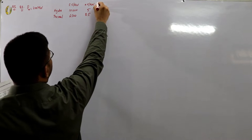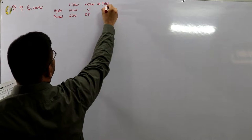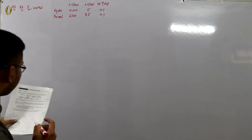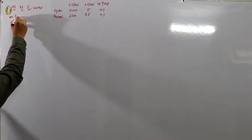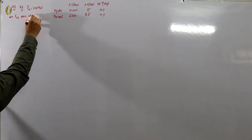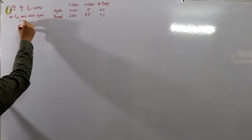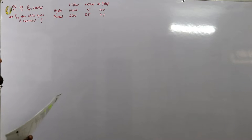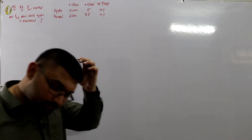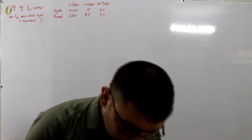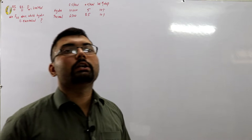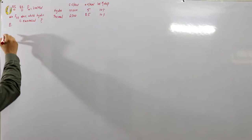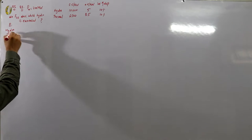The interest and depreciation factor for both is 10%. They are asking us to calculate the minimum load factor above which hydro will be economical. Hydro will be economical because then the operating cost would be less. For that we need the energy units consumed — let's say energy units consumed are E. For hydro, let's do the calculations first.